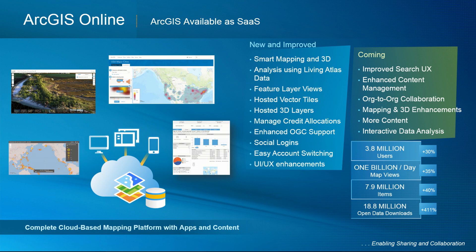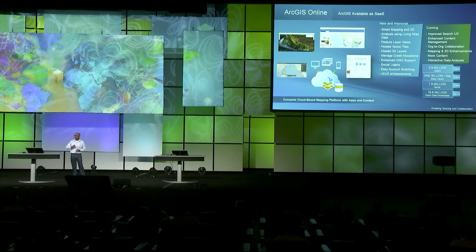ArcGIS Online is ArcGIS available as SaaS. It's very popular, and you're making amazing use of it. There's great growth in numbers of users, numbers of items being created, and map views. We've been working hard with regular quarterly releases, each bringing new capabilities — things like the ability to create views on feature layers, generate vector tiles in Pro and upload them to Online, and create hosted 3D layers. More functionality is coming, including continued improvements to the core experiences.